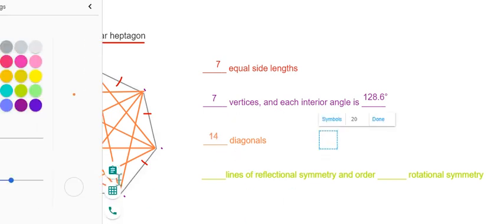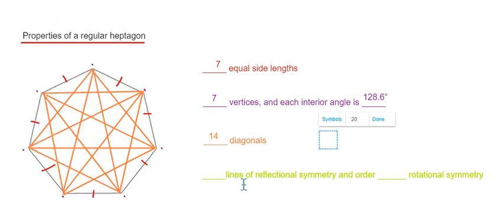And you also might be interested in the rotational and reflectional symmetry. So this is equal to the number of sides of the hexagon. So it has 7 lines of reflectional symmetry and 7 lines of rotational symmetry.